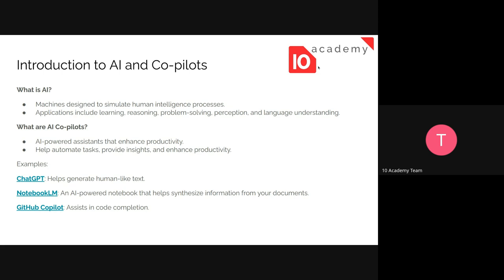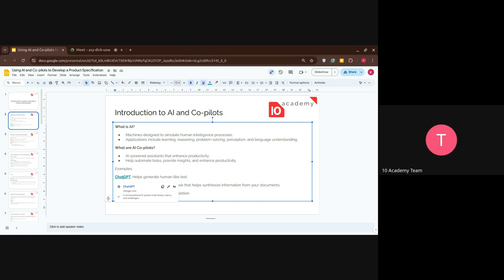What are co-pilots? They are AI-powered assistants that enhance productivity. These are specified for certain use cases. For instance, the GitHub co-pilot is made to assist the user specifically in coding — not for writing a poem or summarizing a book. When an AI-powered assistant enhances productivity for a specific task, we can consider it an AI co-pilot. It can supplement repetitive tasks, provide insights, and enhance productivity. One of the most widely known AI tools is ChatGPT, and that's what we're going to be using for most of the demos in this session.